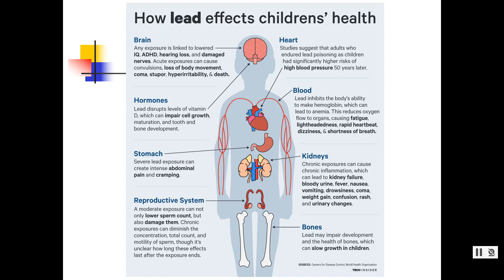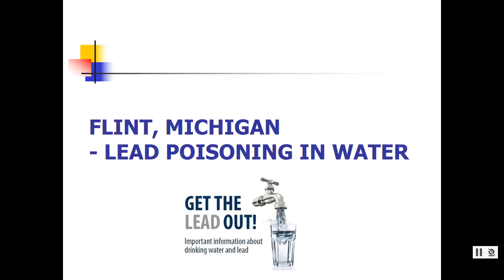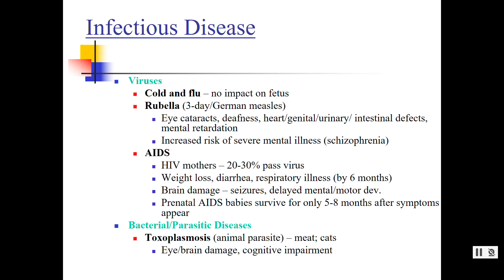Lead can affect children in so many ways — from the brain to hormones, to the stomach, to reproductive issues, to the bones. A few years ago, the water supply change in Flint, Michigan led to extreme lead contamination, which poisoned pregnant mothers, their infants, and children, leading to severe outcomes. Please watch the videos on Blackboard about how lead can affect not just children, but developing organisms and families.